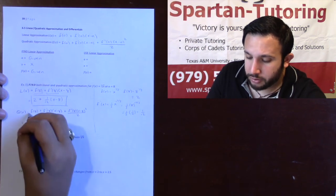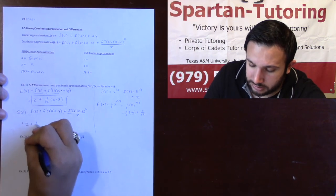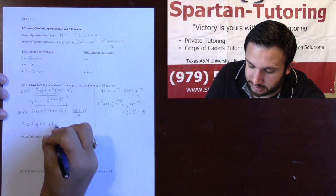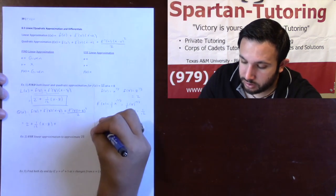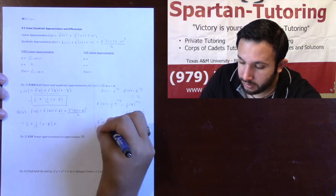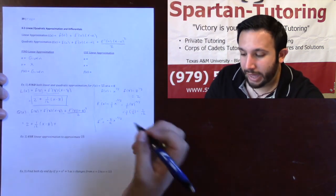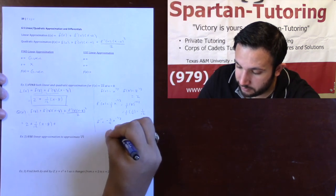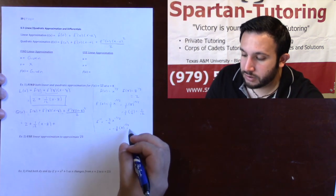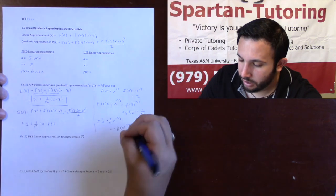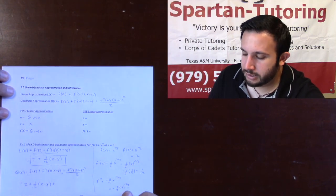Fortunately, the first part of the quadratic is just your linear approximation, which we already know is 2 plus one-twelfth times (x minus 8). Now the last thing we need is f''(8). The second derivative is negative 2 over 9 times x to the negative five-thirds. Plugging in 8, that's negative two-ninths times 8 to the negative five-thirds. Let me show how to compute 8 to the negative two-thirds and then 8 to the negative five-thirds.